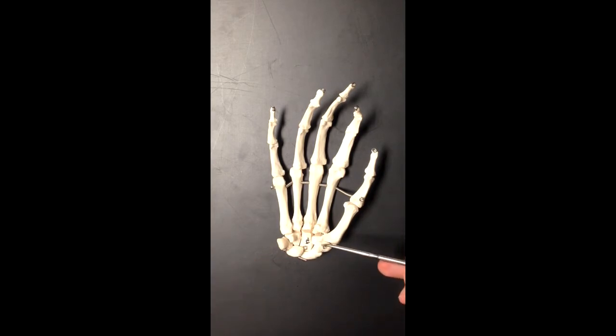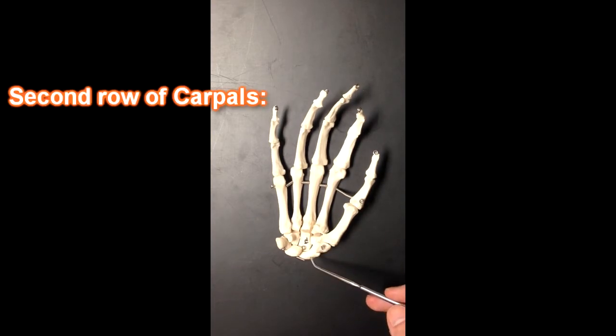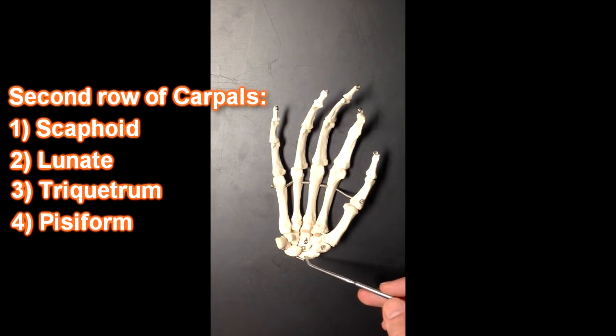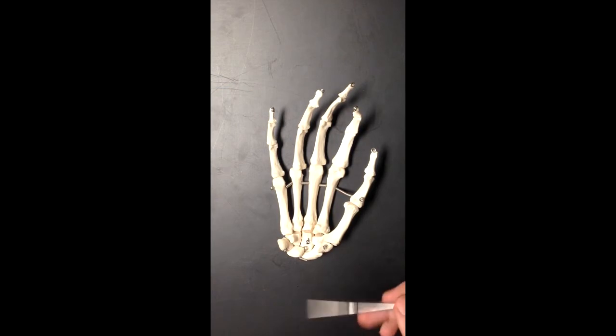So again that first row that I went through, trapezium, trapezoid, capitate, hamate. The next row, scaphoid, lunate, triquetrum, and then pisiform. Again scaphoid, lunate, triquetrum, and then pisiform. So those are the two rows of four carpal bones.